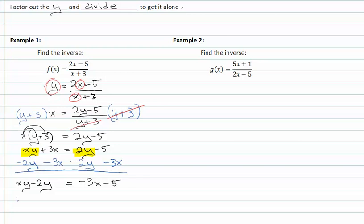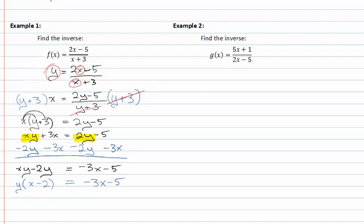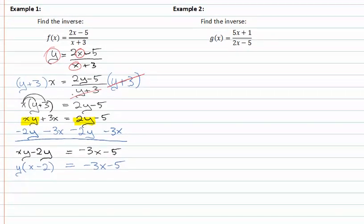Now, if I factor out a y, I get x minus 2 times y equals negative 3x minus 5. Now I'll divide both sides of my equation by x minus 2, and I now have y equal to negative 3x minus 5 all over x minus 2. So the inverse or f inverse of x is equal to negative 3x minus 5 over x minus 2.